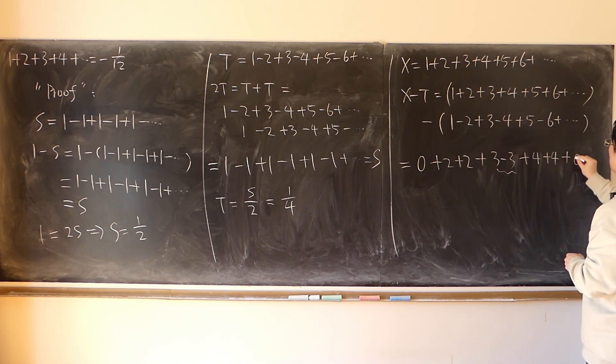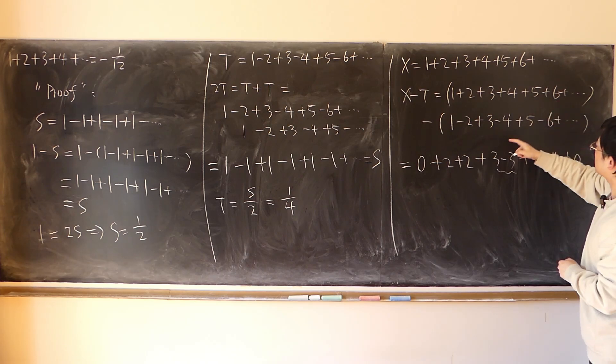4 minus minus 4 plus 4. Again, we have 0. 5 minus 6, 6 plus 6.